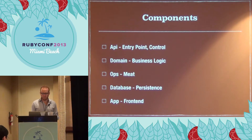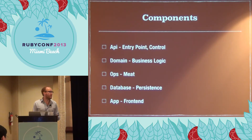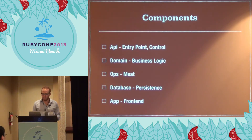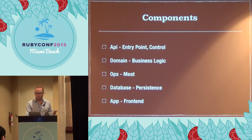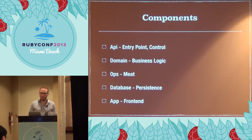We have a database for persistence — we're using MongoDB in a cluster. The database isn't that important; whatever you use just needs to be reliable. Then the front end can be an app, command line, whatever. That's why you make the API — so you have that flexibility at the front-end level.